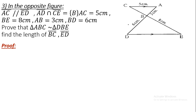In the next figure, there is an intersection between two sides AD and CE at point B. We are given: CE equals 5 centimeters, AB equals 8 centimeters, AB equals 3 centimeters, and BD equals 6 centimeters. We need to prove that triangle ABC is similar to triangle DBE.